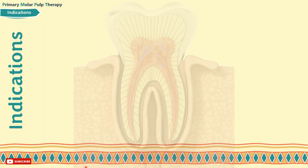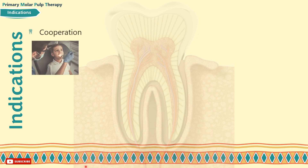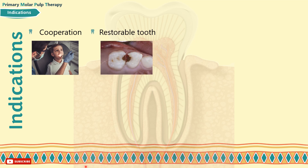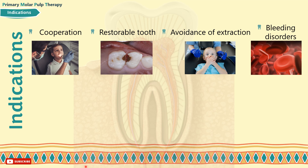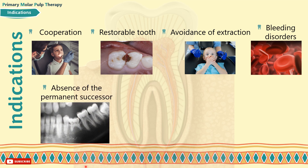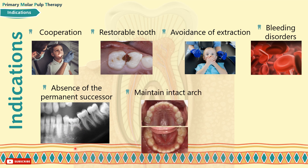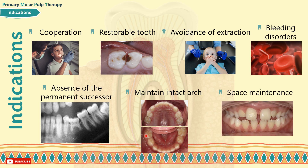Pulp treatment in children is indicated in the following cases: 1. Cooperative child and carers. 2. Restorable tooth. 3. Avoidance of the psychological trauma of extraction at an early age. 4. Medical conditions where extraction should be avoided, like hemophilia and bleeding disorders. 5. Absence of the permanent successor tooth. 6. To maintain an intact arch in the primary dentition. 7. Space maintenance in the mixed dentition.